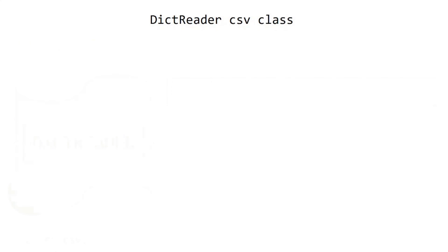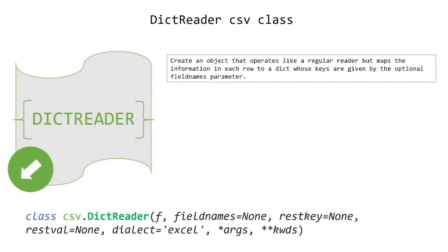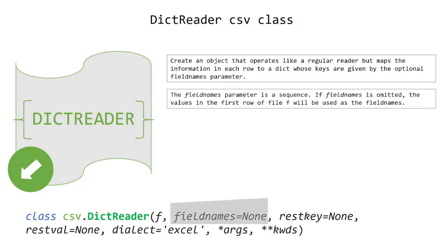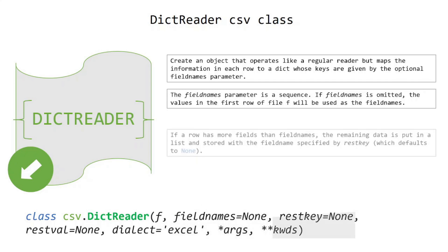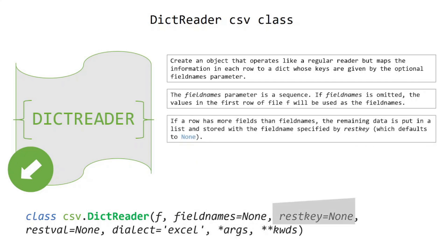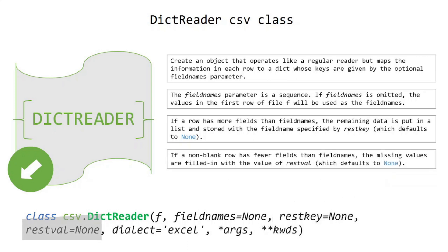DictReader CSV class creates an object that operates like a regular reader but maps the information in each row to a dictionary whose keys are given by the optional fieldnames parameter. The fieldnames parameter is a sequence. If fieldnames is omitted, the values in the first row of the file will be used as the field names. If a row has more fields than fieldnames, the remaining data is put in a list and stored with the field name specified by restkey, which defaults to None. If a non-blank row has fewer fields than fieldnames, the missing values are filled in with the value of restval, which defaults to None.